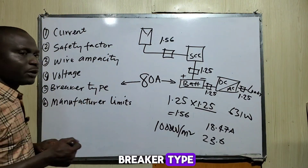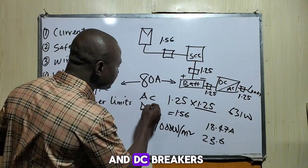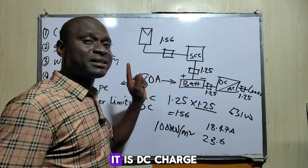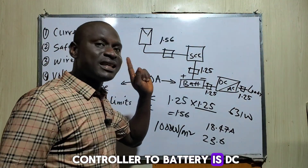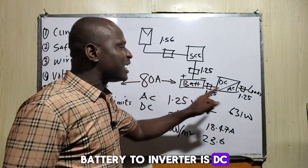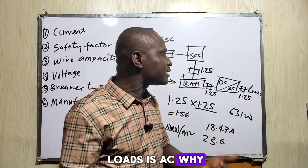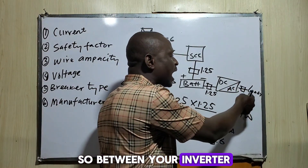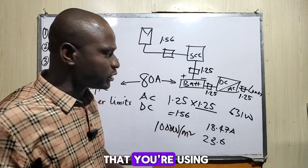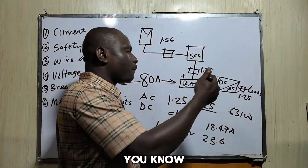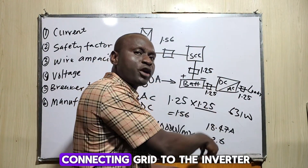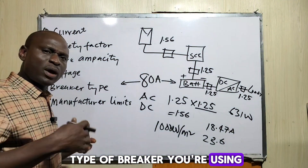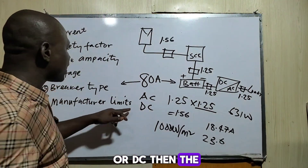Then we have the breaker type — AC breakers and DC breakers. From solar panel to charge controller is DC; charge controller to battery is DC; battery to inverter is DC. Then inverter to your load is AC, because the inverter has converted DC to AC. Between your inverter output and your load, use an AC breaker. If you are connecting the grid to the inverter, you also use AC.